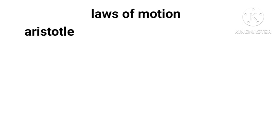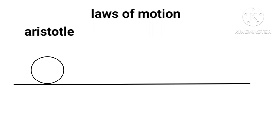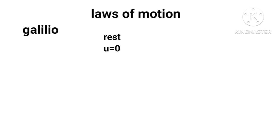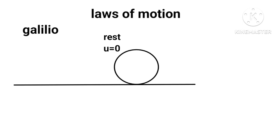Today we will try to understand about laws of motion. Long ago, it was Aristotle who first said an external force is required to set a body in motion. But he could not imagine as to why a body stops; he described this as natural force. Then came Galileo, who said if a body is at rest, it will be at rest.